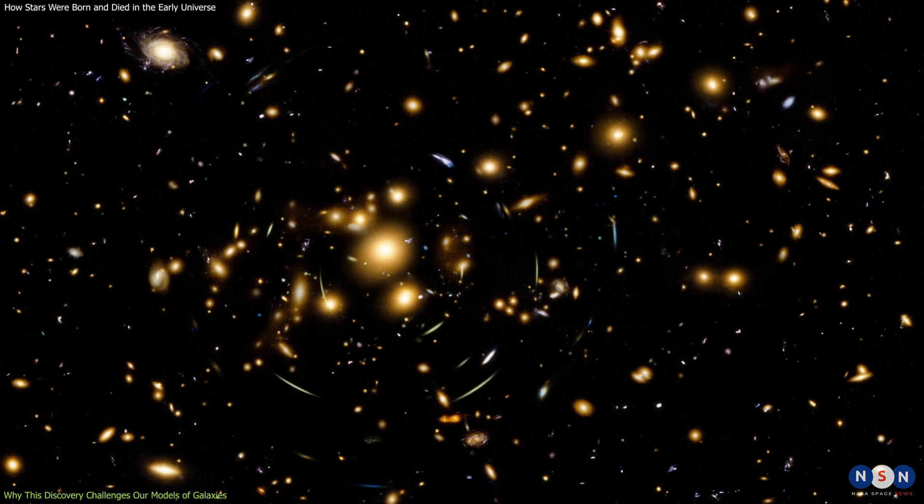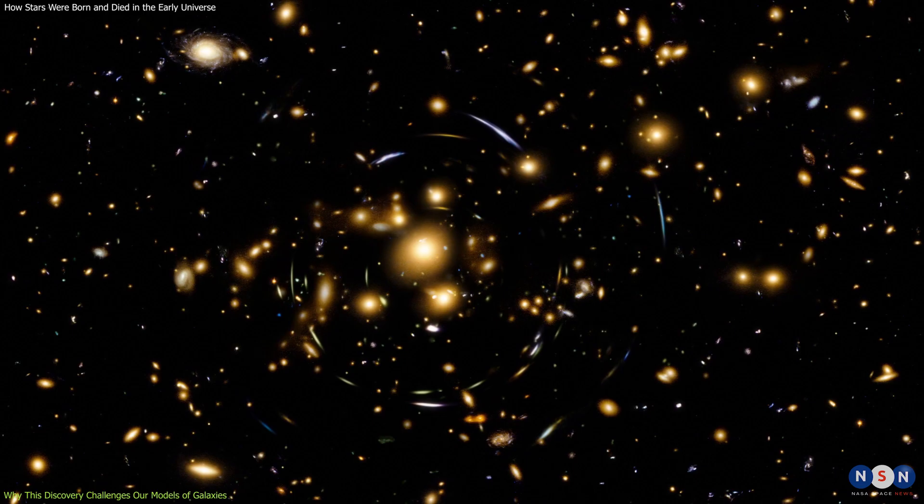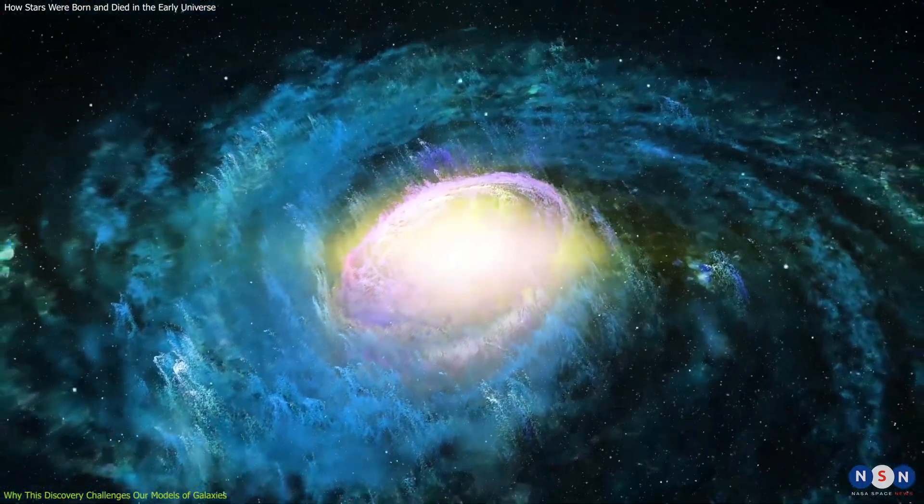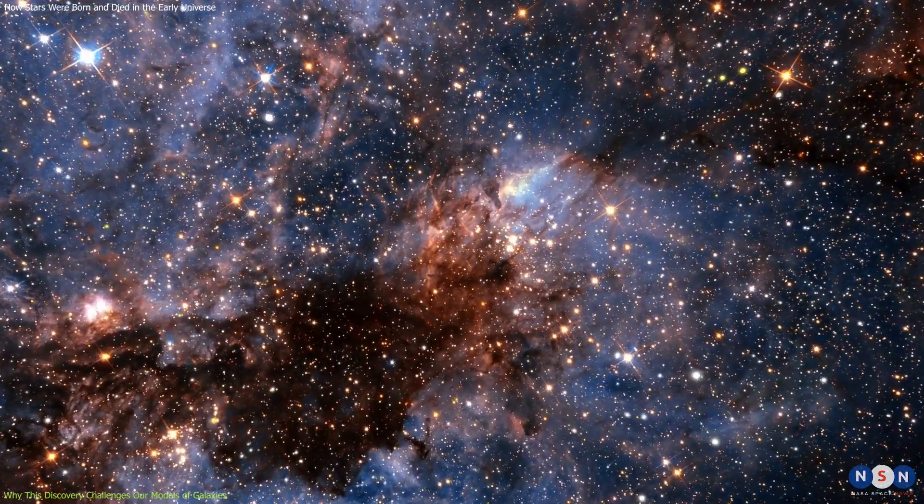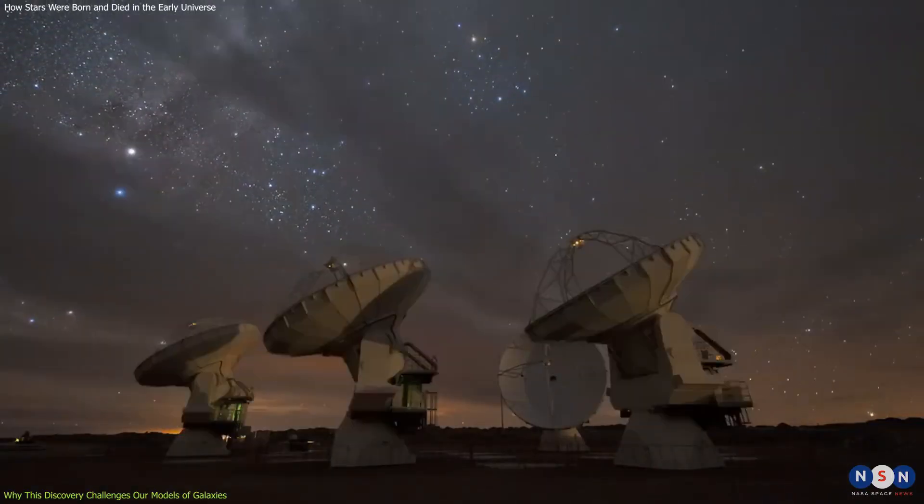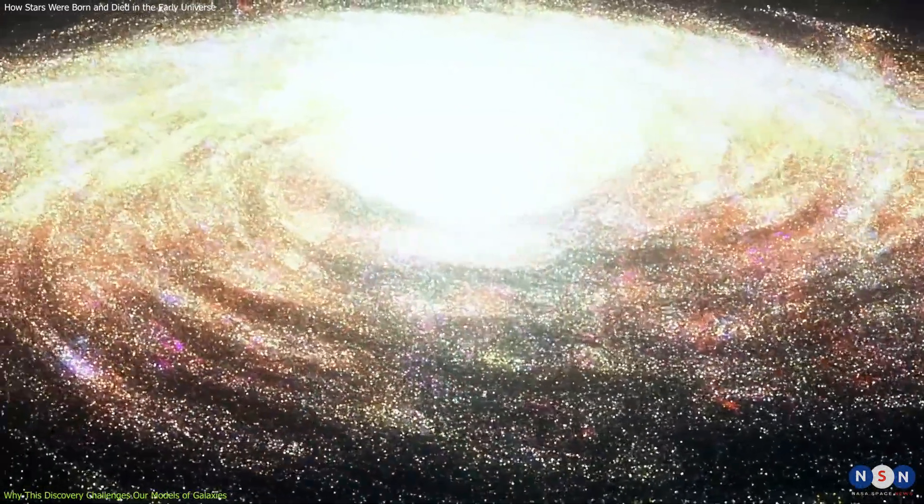This shape could be influenced by the gravitational lensing effect of the cluster of galaxies that it belongs to or by some internal dynamics that we don't fully understand. These challenges and contradictions show us that we still have a lot to learn about the early universe and stellar life cycles.